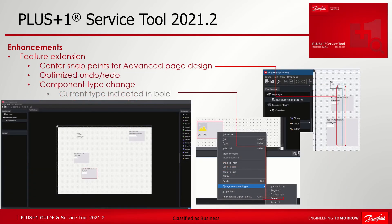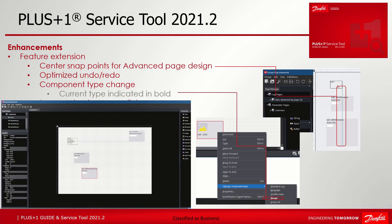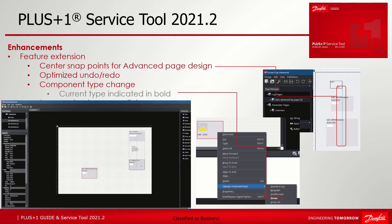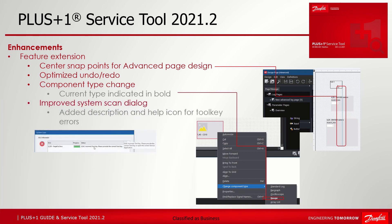At the end of the What's New 21.2 presentation, we will have a short look at the feature extensions inside the Service Tool, starting with center snap points for advanced page design. Before, we had left, right, top, and bottom snap points — snapping to edges — but no easy way to achieve center alignment. That's why we added center snap points as well. When moving a component, the Service Tool will provide blue guidelines for snapping when the center of the item is aligned with other items.